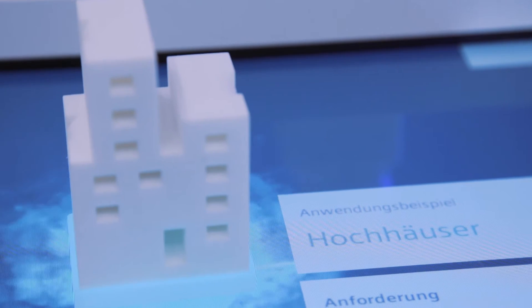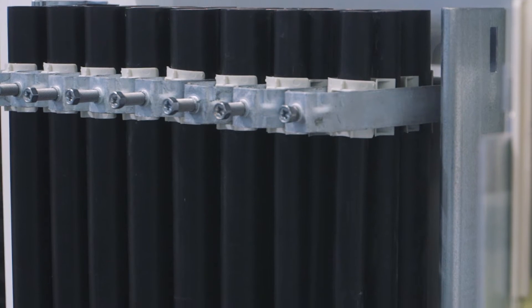Today I want to show you our bus bar trunking system. This system is a true alternative to cables. Imagine you are planning a high-rise building. 2500 amps of electrical power need to find their way to the upper floors by the riser shaft.